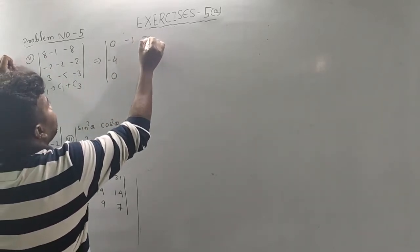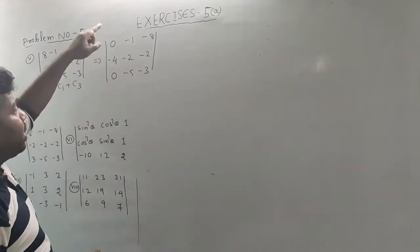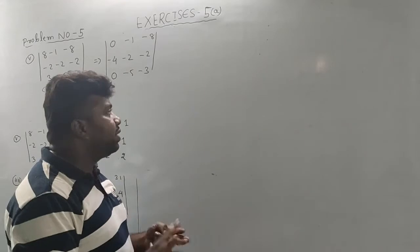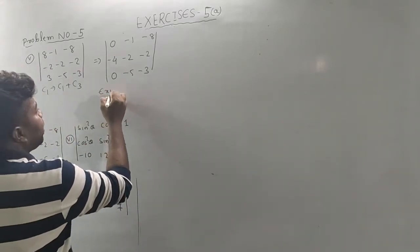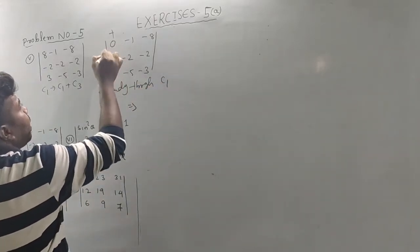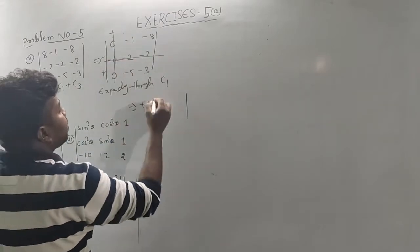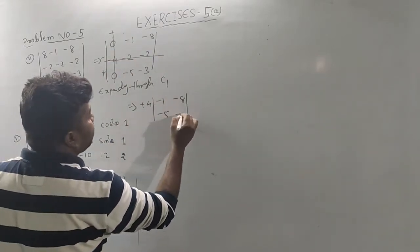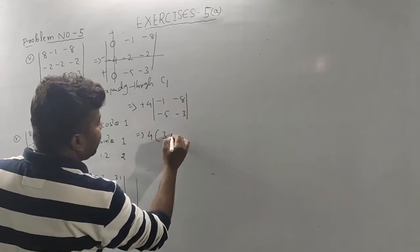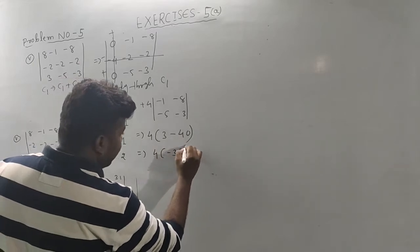Now I can see: minus 1, minus 8, minus 2, minus 2, minus 5, minus 3. So the first column has 0 created. If I draw a cross — expanding through C1 — plus, minus, plus, minus, plus: 4, plus 4, minus 1, minus 8, minus 5, minus 3. Then: 4 into minus, minus plus 3, minus minus 4 — that is minus 34, minus 37.